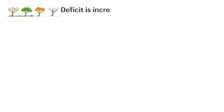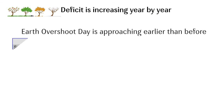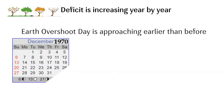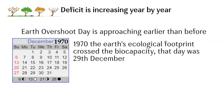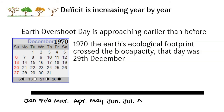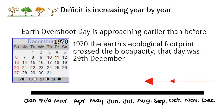For years now, our deficit is increasing year by year and so Earth Overshoot Day is approaching earlier than before. At first, in 1970, the Earth's ecological footprint crossed the bio-capacity — that day was 29th December. But from then on, each year the ecological footprint is increasing, bringing Overshoot Day earlier, meaning we are depleting all resources of the year well before the previous year.